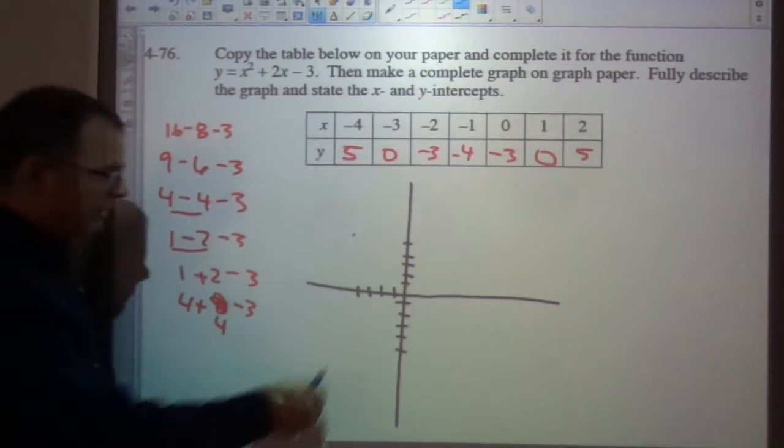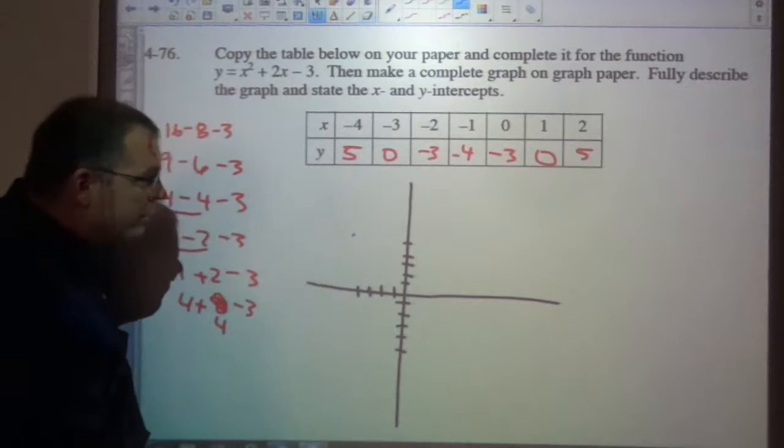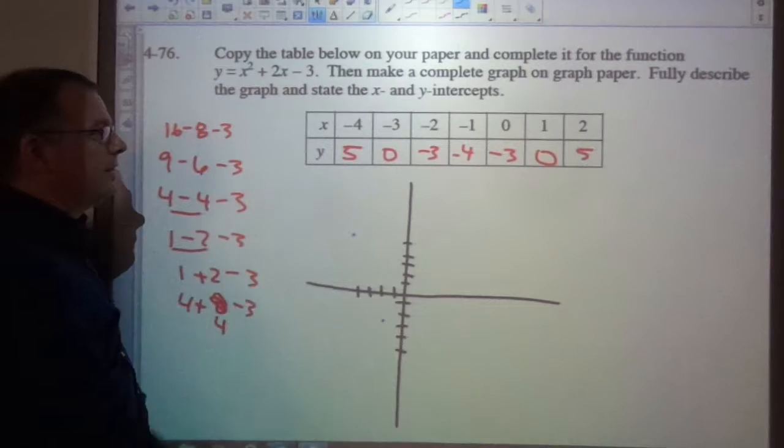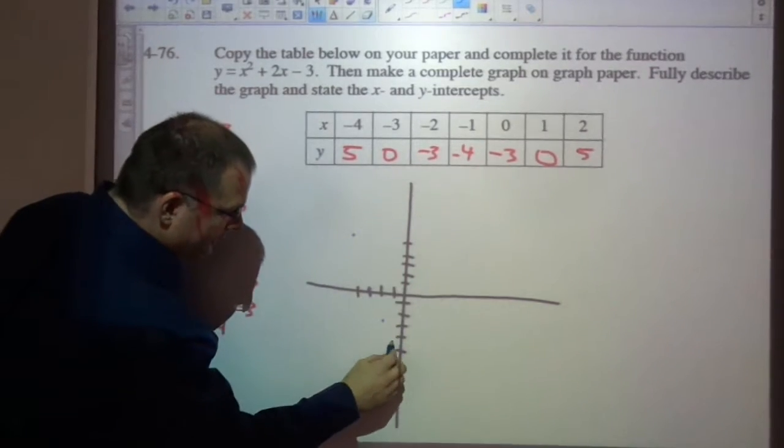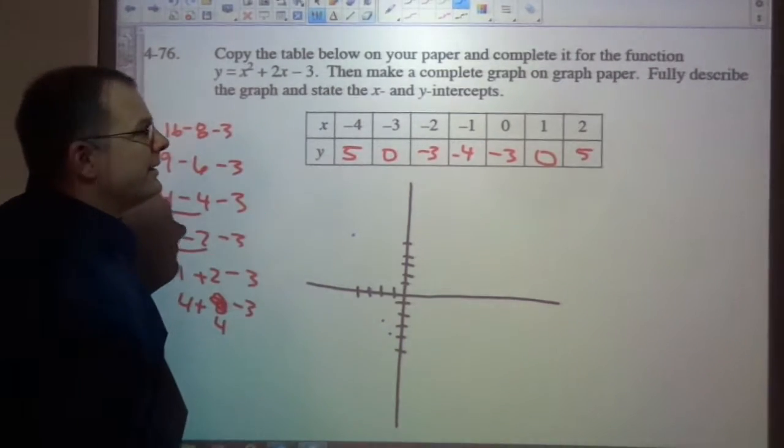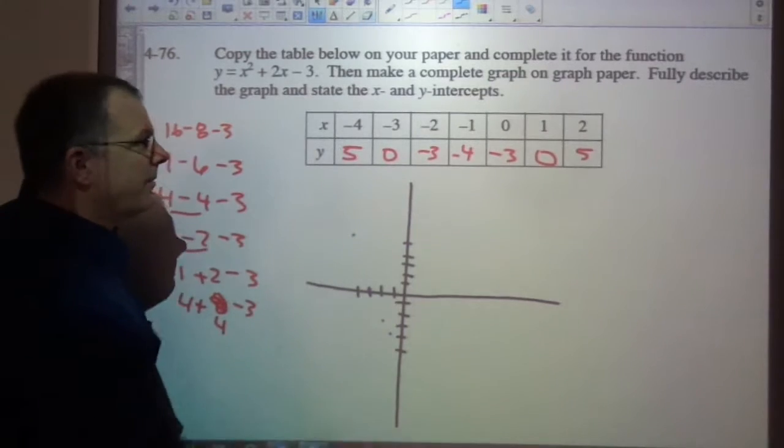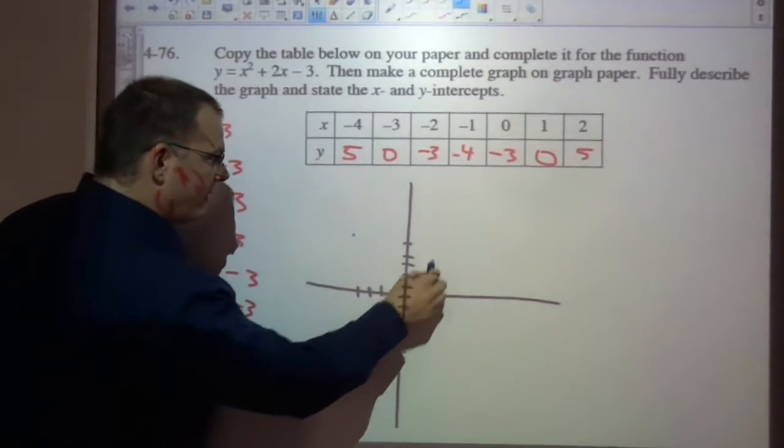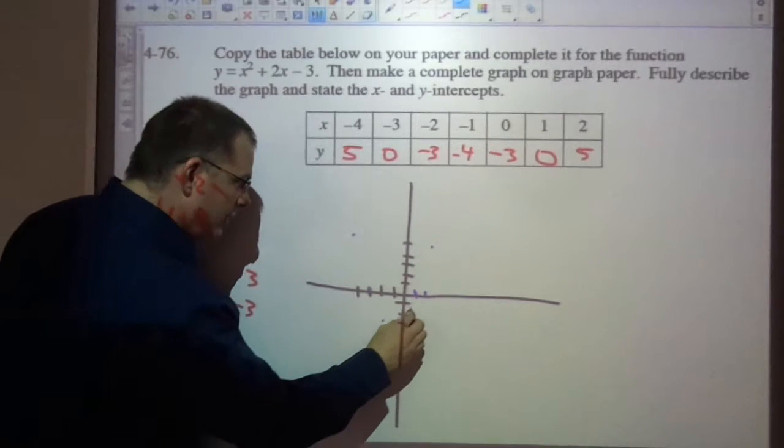Negative 3, 0. Negative 2, negative 3. Negative 1, negative 4. And 0, negative 3 coming back up. 1, 0. And 2, 5. So here's what I got.